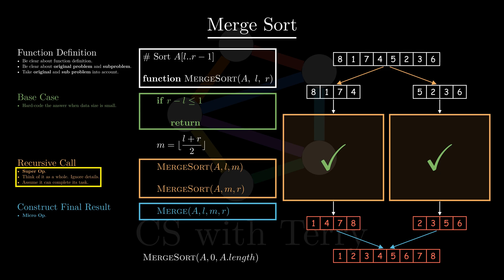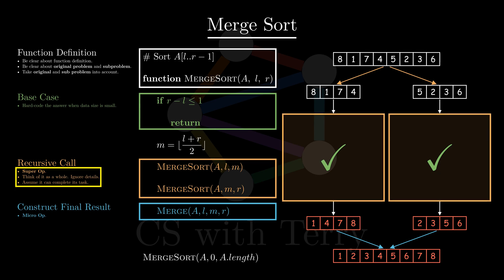With this way of thinking, the pseudocode becomes very simple. We perform a super operation to sort the left and right subarrays, and trust that it can do it. Then, we merge the sorted left and right subarrays to get the sorted original array. With the merge sort example, we can see that the key to treating recursion sickness is: don't delve into the internal logic of the super operation of recursion, but just have faith that it can complete its mission.